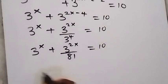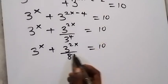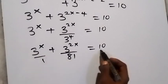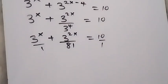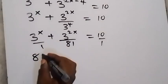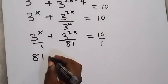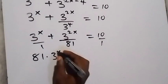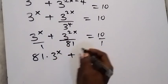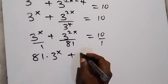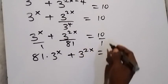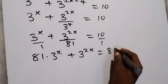We can clear this fraction by multiplying through by 81. This becomes 81 times 3 raised to power x, plus 81 times 3 raised to power 2x, equals 81 times 10, which is 810.